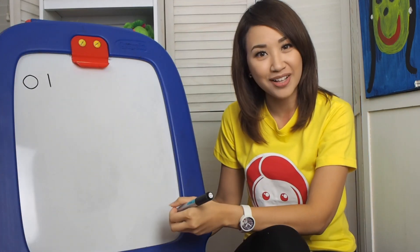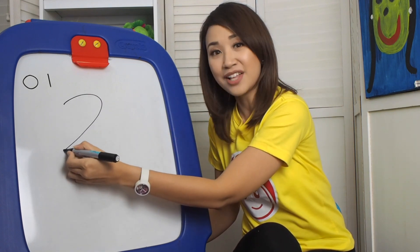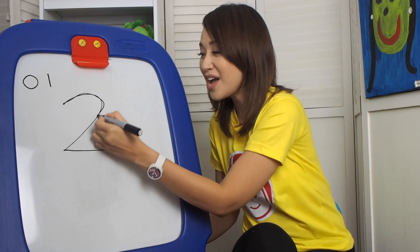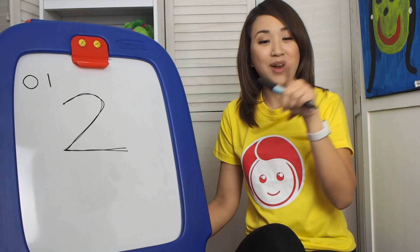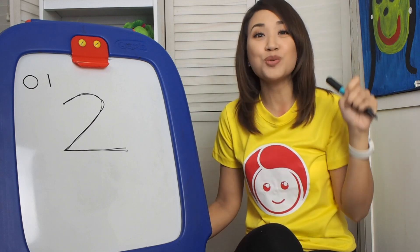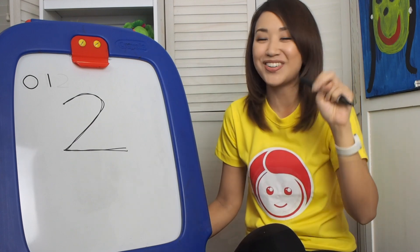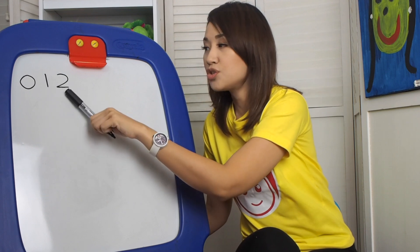Very good. What is after number one? Good job — number two. So how do we write number two? Halfway round and then straight out to make the number two. All right. So we're done with zero, one, two.